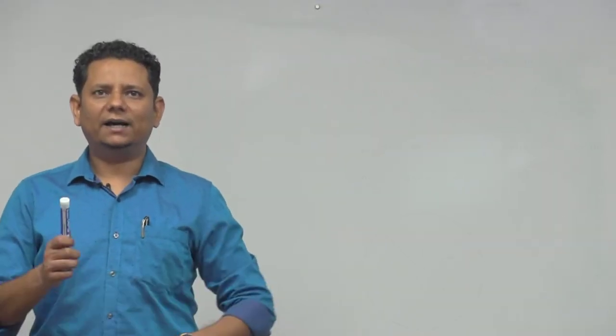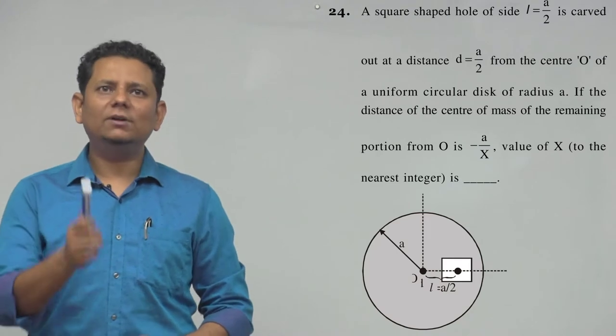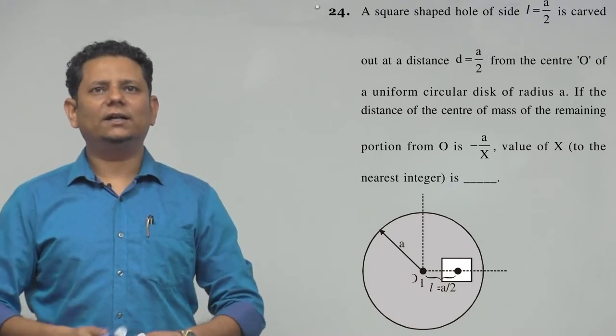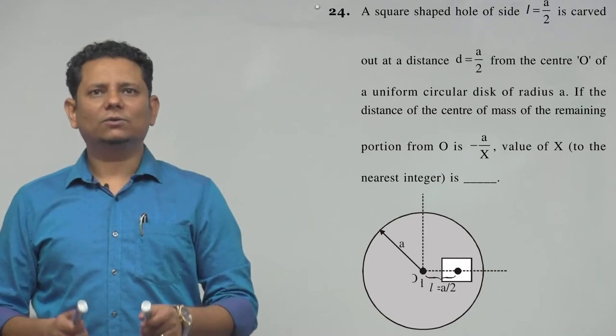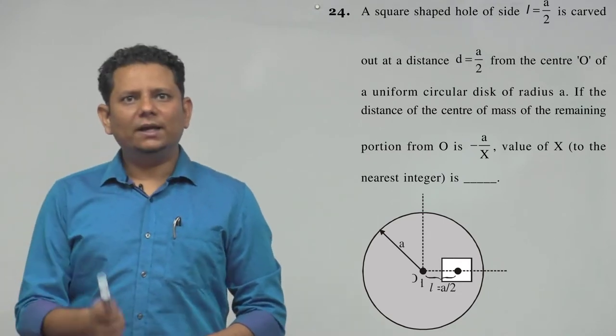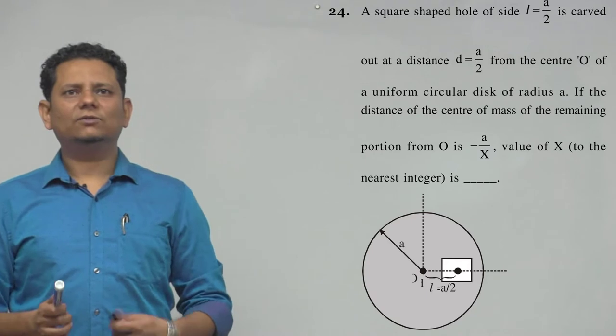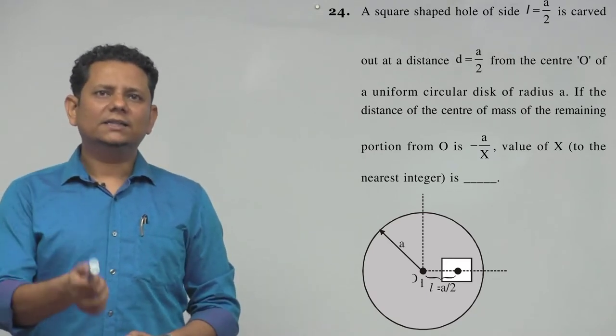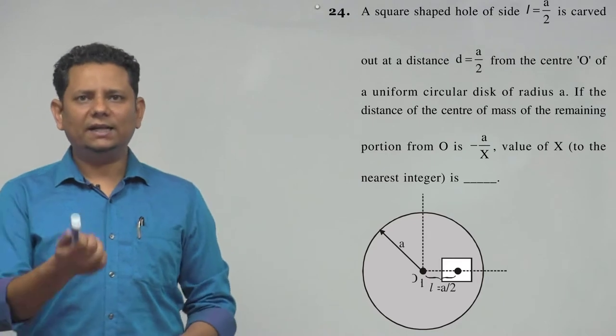Next question. The question says a square shaped hole of side L equal to A by 2 is carved out at a distance D equal to A by 2 from center O of a uniform circular disk of radius A. If the distance of center of mass of the remaining portion from O is minus A by X, the question is value of X. What is the nearest integer?